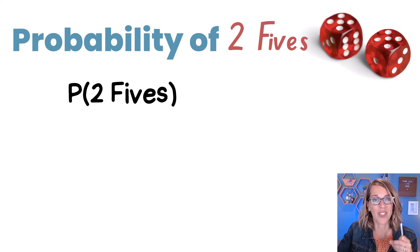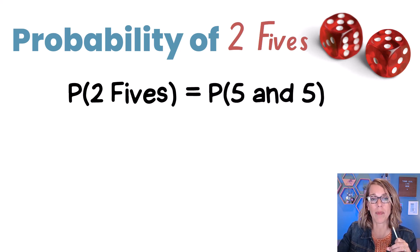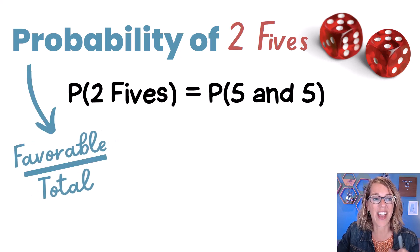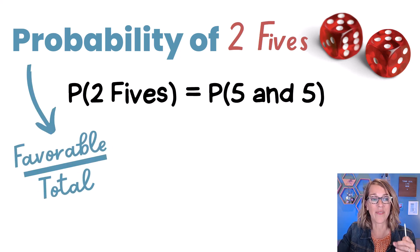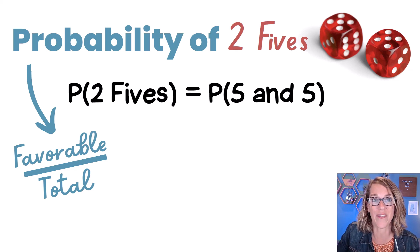And as we build that probability of two fives, it's really the probability of getting a five on the first dice and a five on the second dice. I can think of that probability as the fraction, the number of favorable outcomes out of the total number of outcomes.